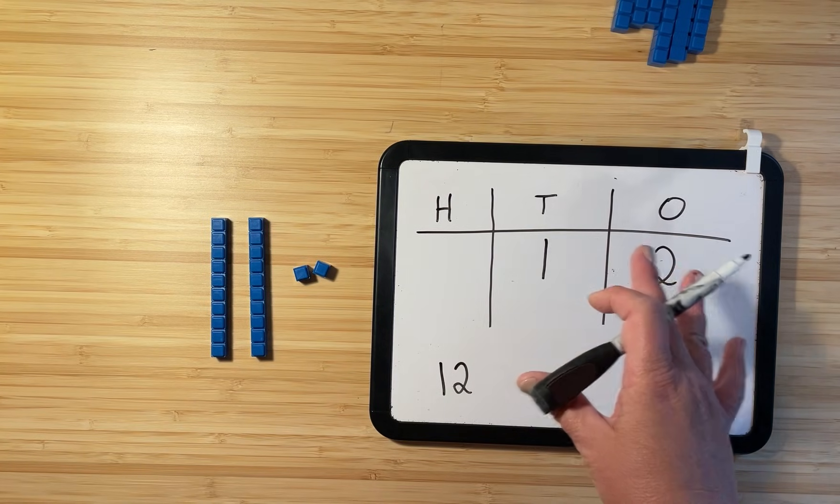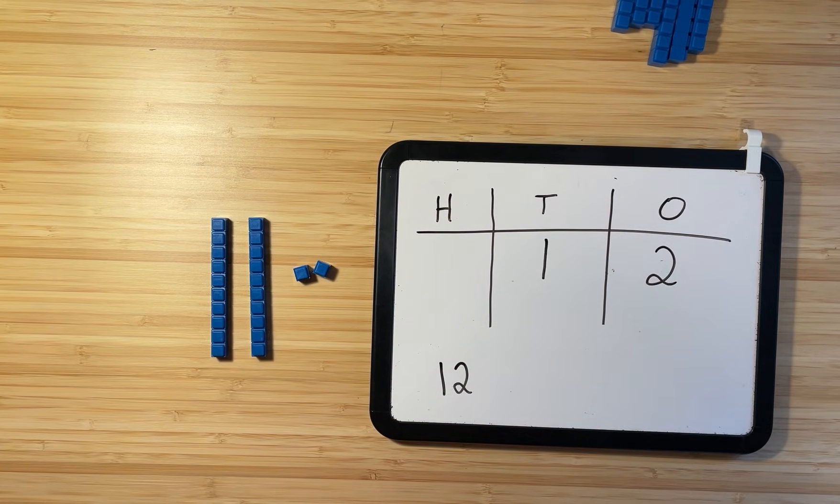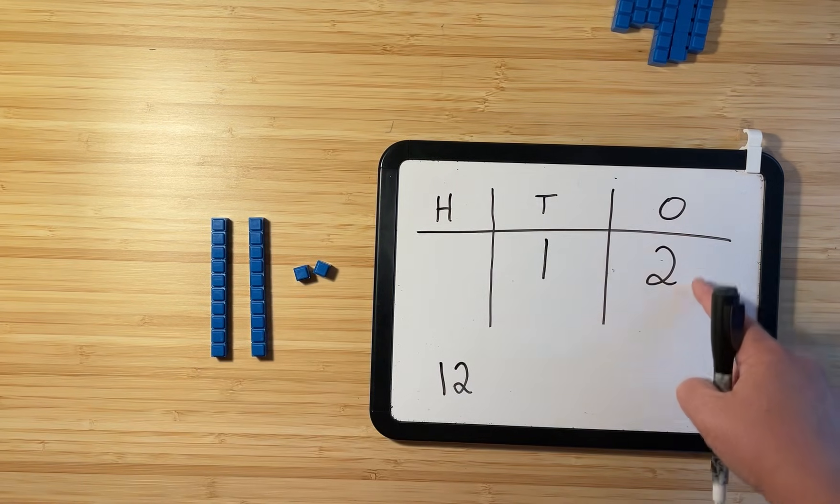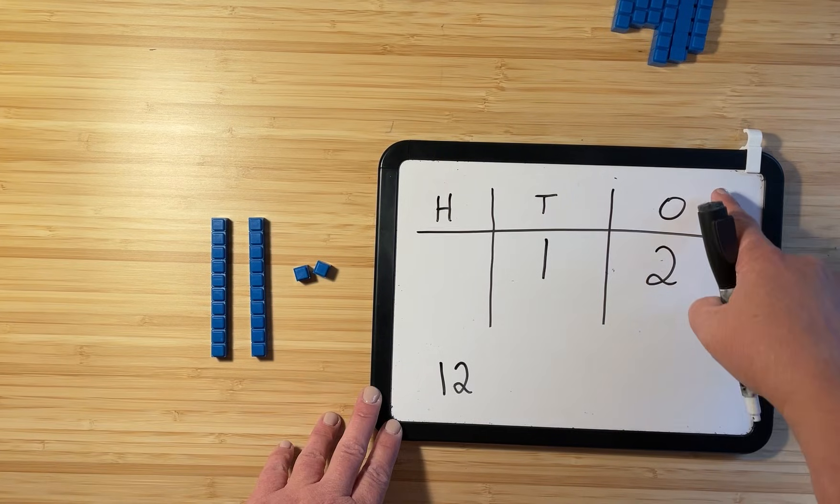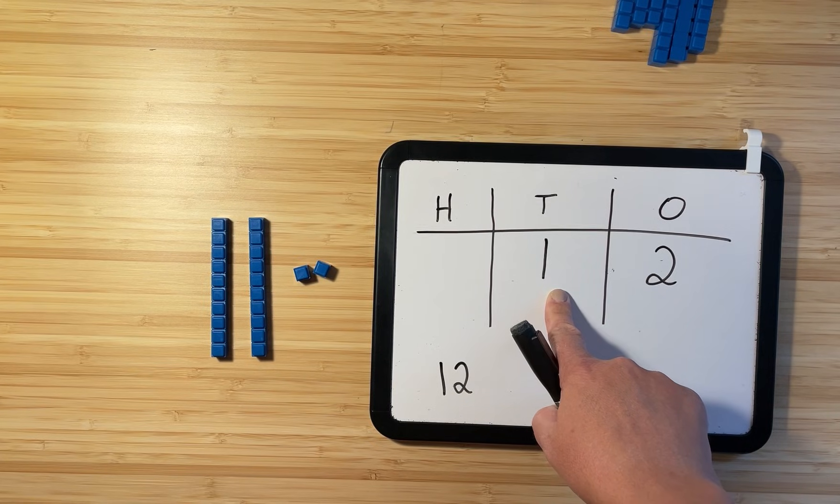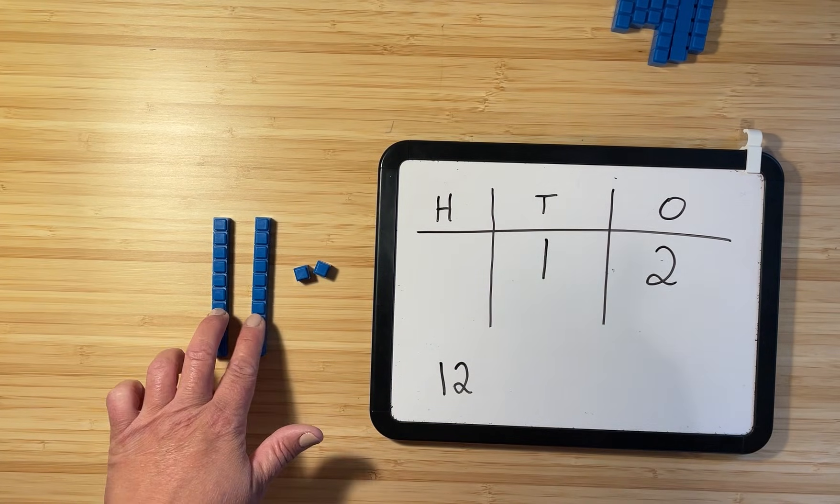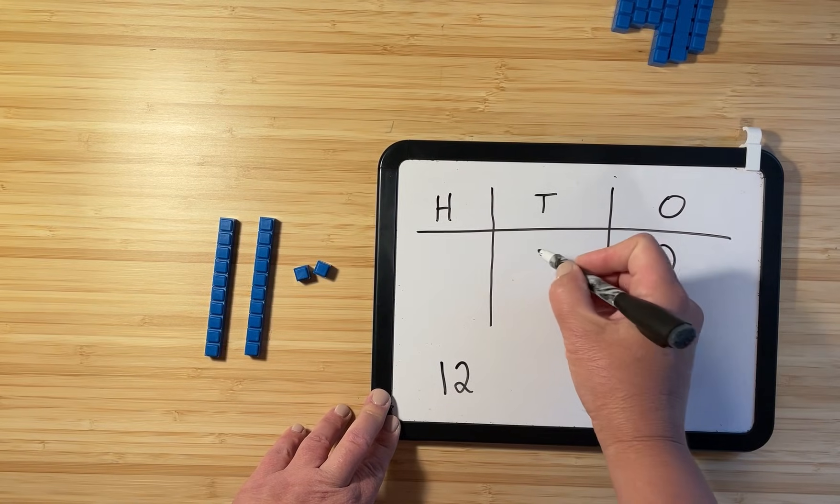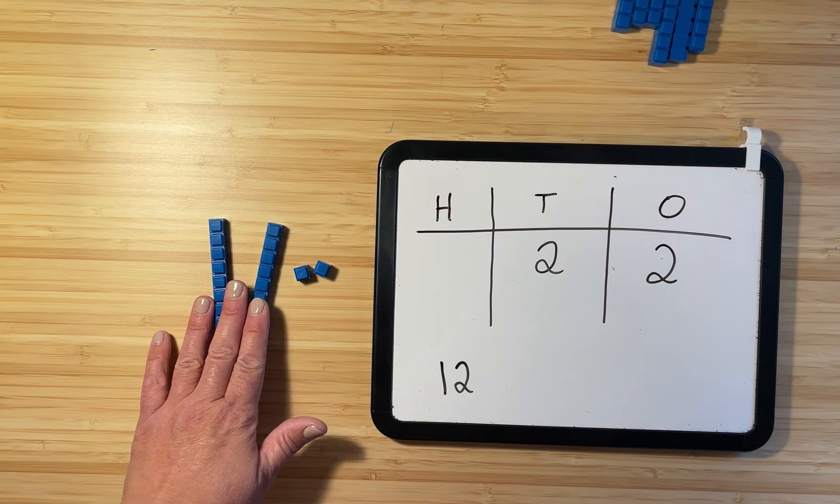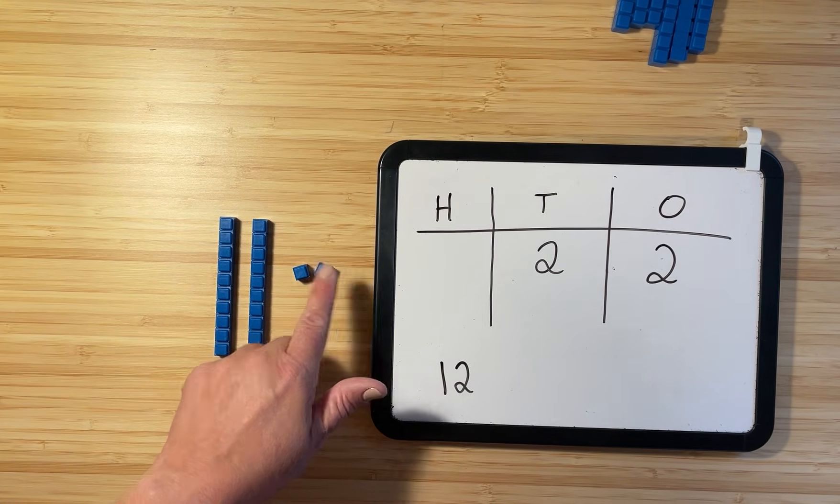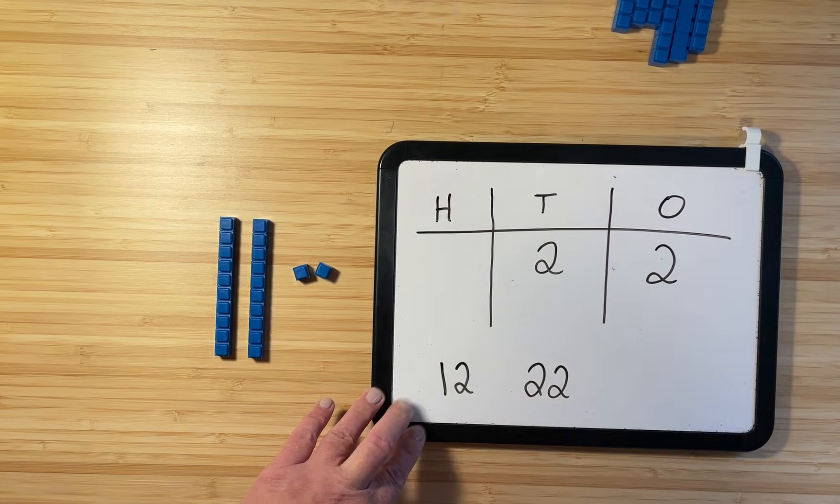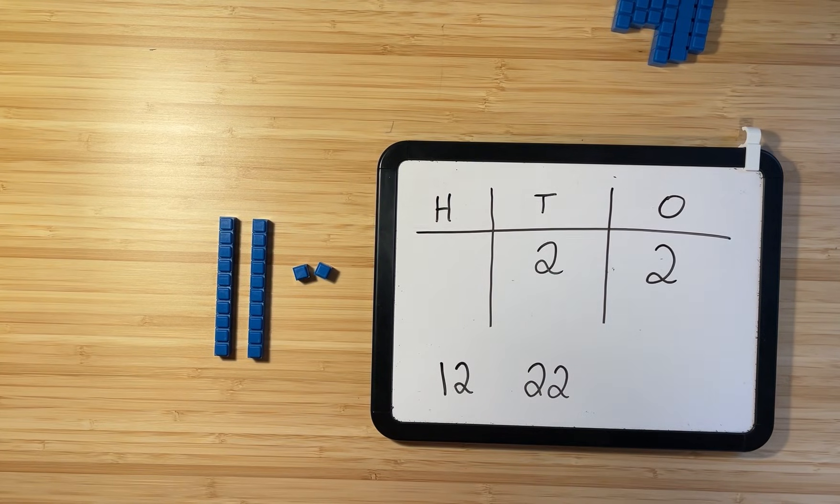What does this look like on our place value chart? What is going to change? Do we still have two ones? Yes, we do. So this number is going to stay the same because we still have a two in the ones column. Now how many tens do we have? Do we have one 10? No, we don't. We have two tens. So this one is going to become a two. We can see that the number 22 is made up of two tens and two ones. And if we wanted to just write the number 22, it's going to look like that.